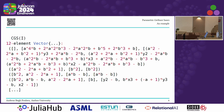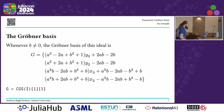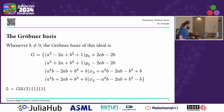Basically, the Gröbner system describes under what conditions on the parameters the Gröbner basis looks different. For example, it says if this polynomial equation is zero and this polynomial equation is non-zero, then B squared is the Gröbner basis of this system. We are interested in the first case: whenever B is non-zero, this is the Gröbner basis of the ideal — that's the generic case whenever the triangle is non-degenerate. We can extract this from the Gröbner system.